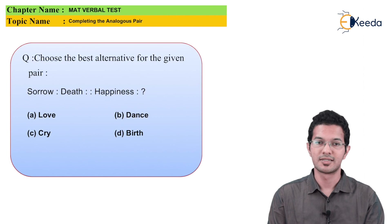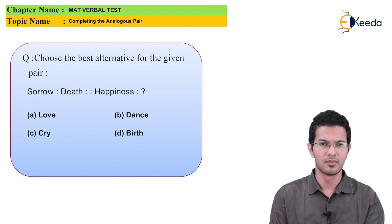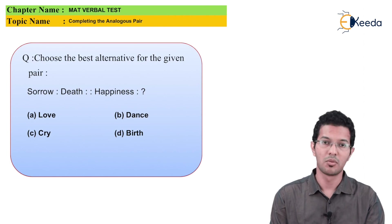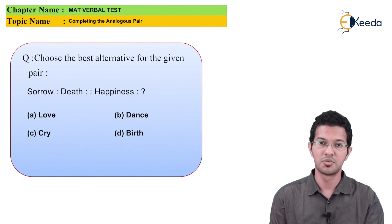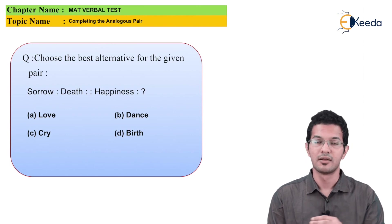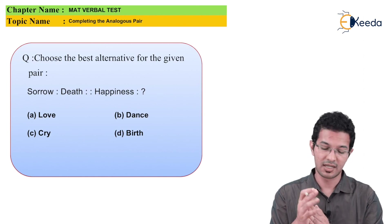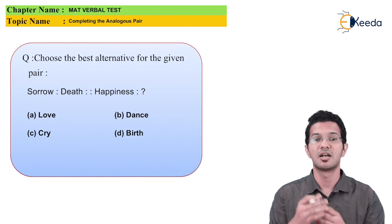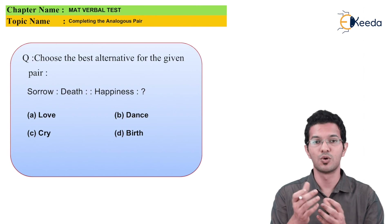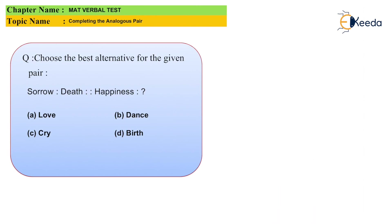What is related to happiness? Looking at the options: Love, Dance, Cry, and Birth. The first relation gives us the second relation — when someone is born, we feel happiness. Hence the answer to this question is Option D, which is Birth.